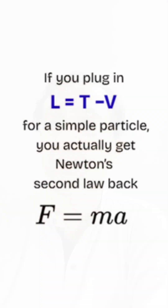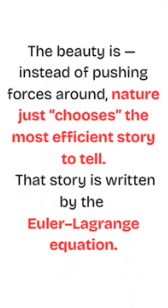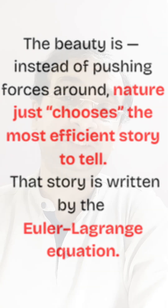If you plug in L equals T minus V for a simple particle, what you get is Newton's second law, F equals MA. The beauty is that instead of pushing forces around, nature just chooses the most efficient story to tell, and that story is written in the Euler-Lagrange equation.